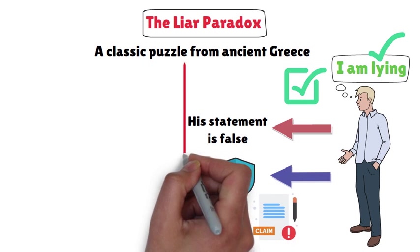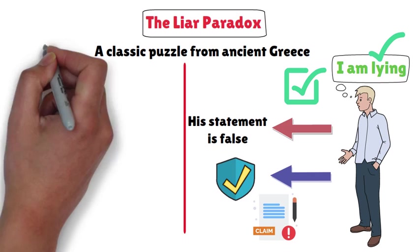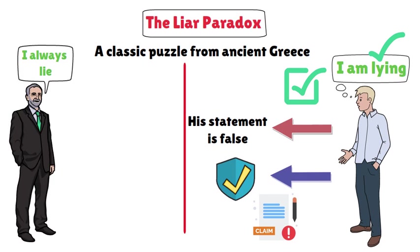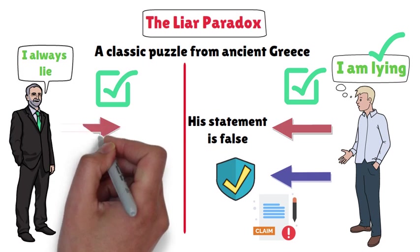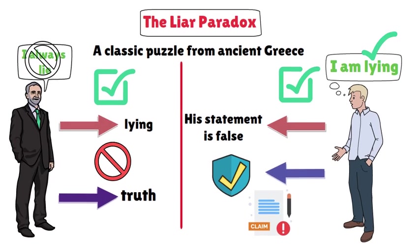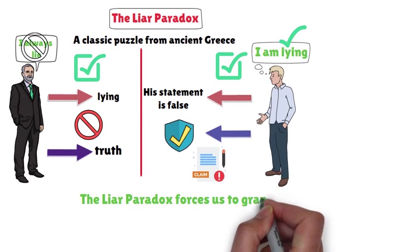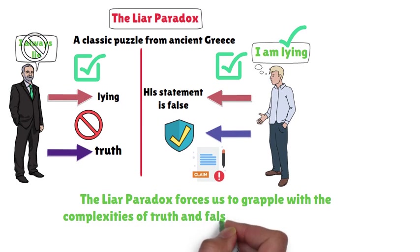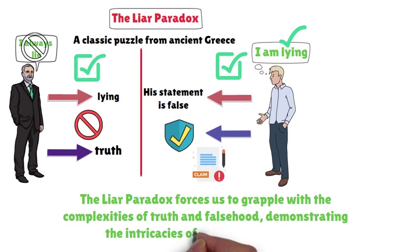One engaging example could be a situation where a politician declares, "I always lie." If this statement is true, then they are indeed lying. But if it's false, then they occasionally tell the truth, contradicting the initial claim. The Liar Paradox forces us to grapple with the complexities of truth and falsehood, demonstrating the intricacies of language and logic.